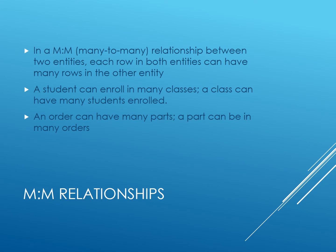In a many-to-many relationship, a row in one table can have many rows in the other table, and a row in the other table can have many rows in the first table. For example, a student can enroll in many classes, while each class can have many students enrolled in it. In another example, a sales order can include many parts, while a part can be in multiple sales orders.